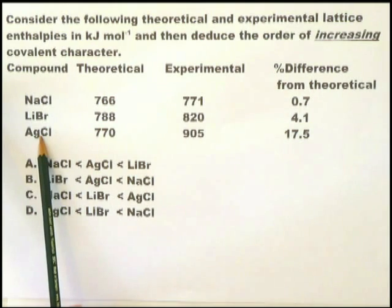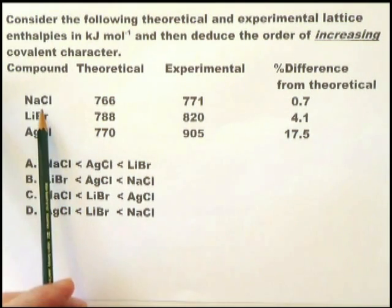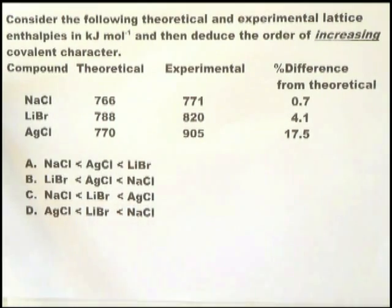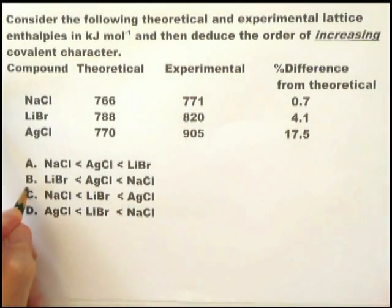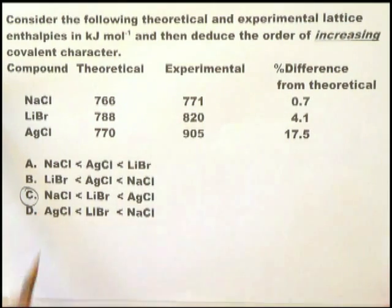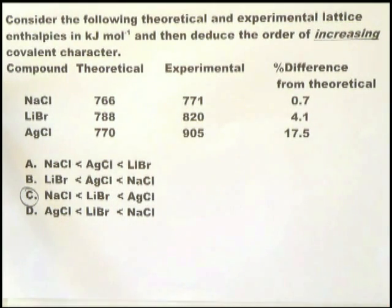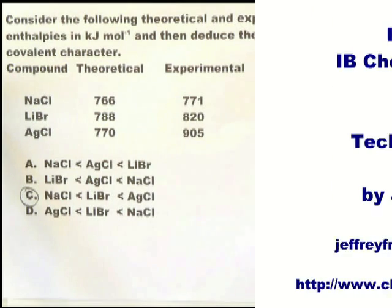This particular question is asking about increasing covalent character. So we know AgCl has the highest covalent character, NaCl has the lowest, that gives us C as the answer. AgCl has greater covalent character than LiBr which has greater covalent character than NaCl.